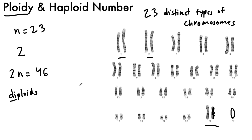We know that we have 23 distinct types of chromosomes because if we divide both sides by two, we get n equals 23. We've got 23 distinct types.